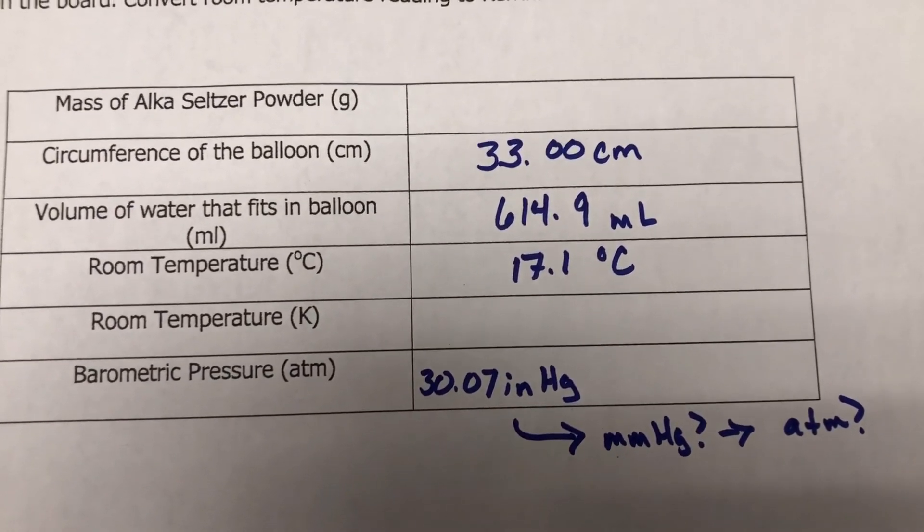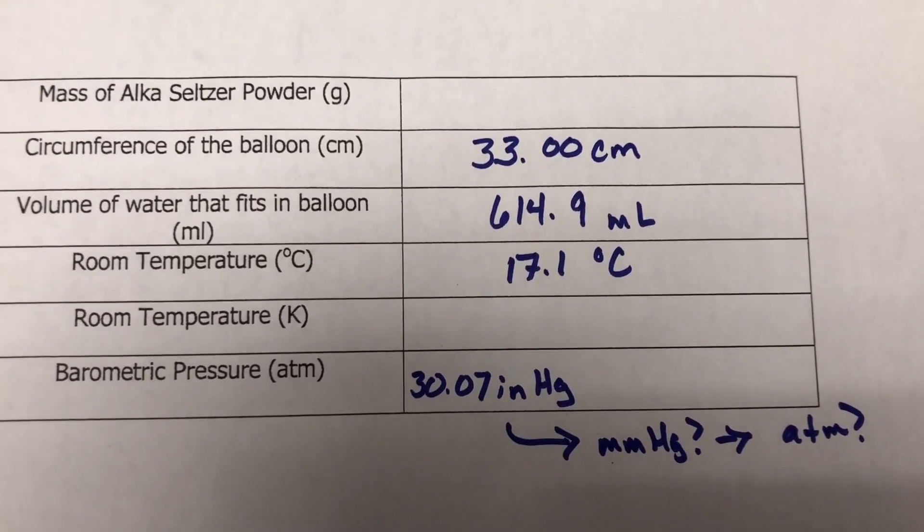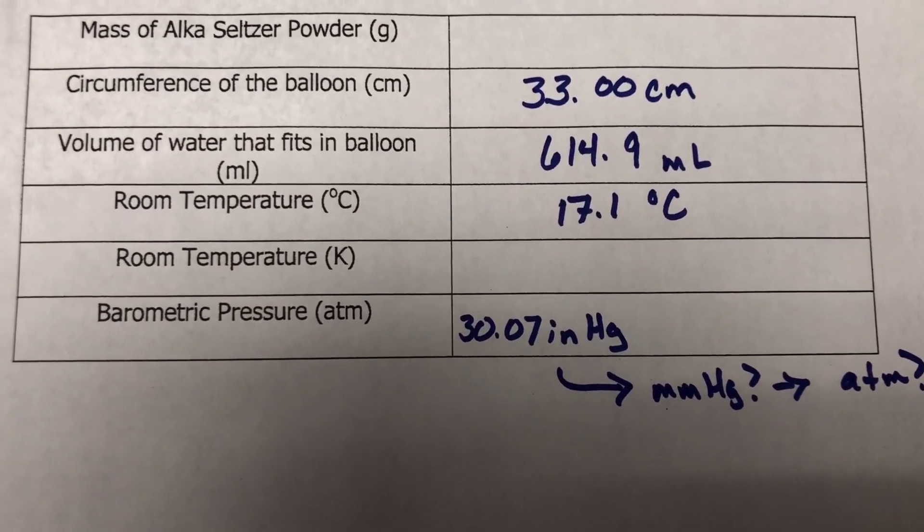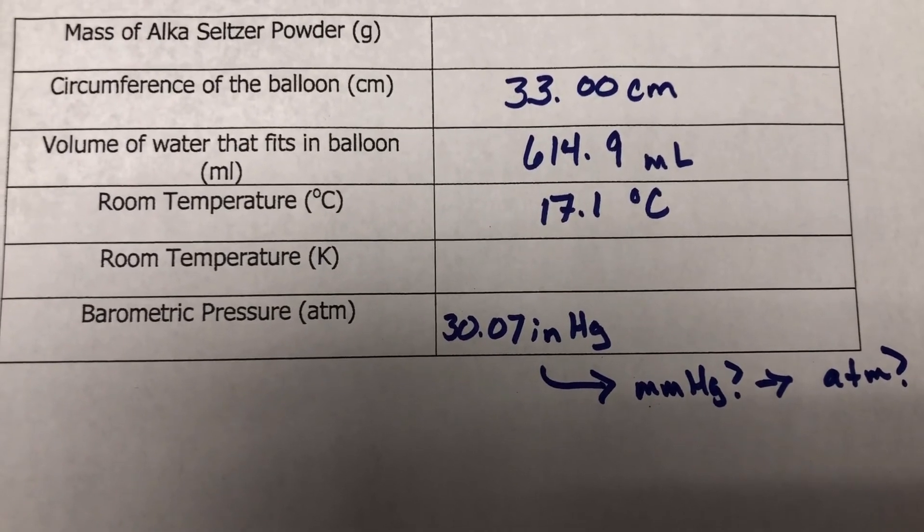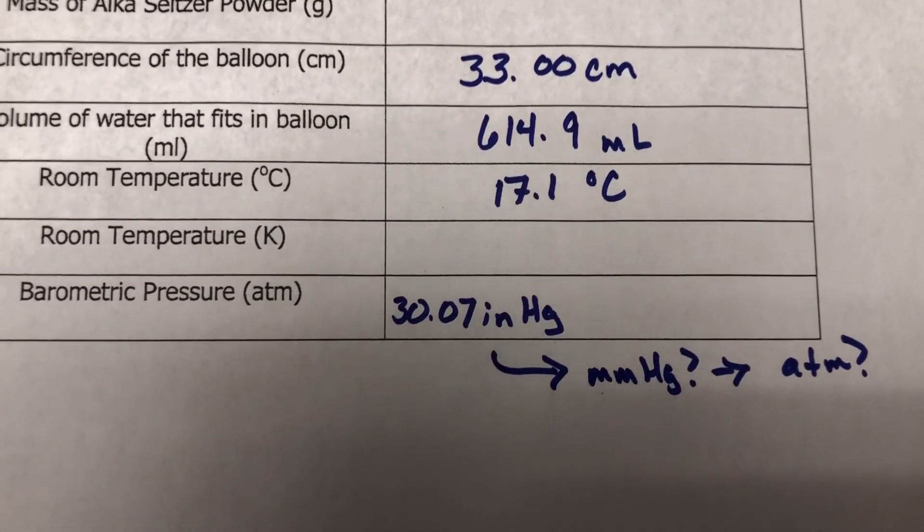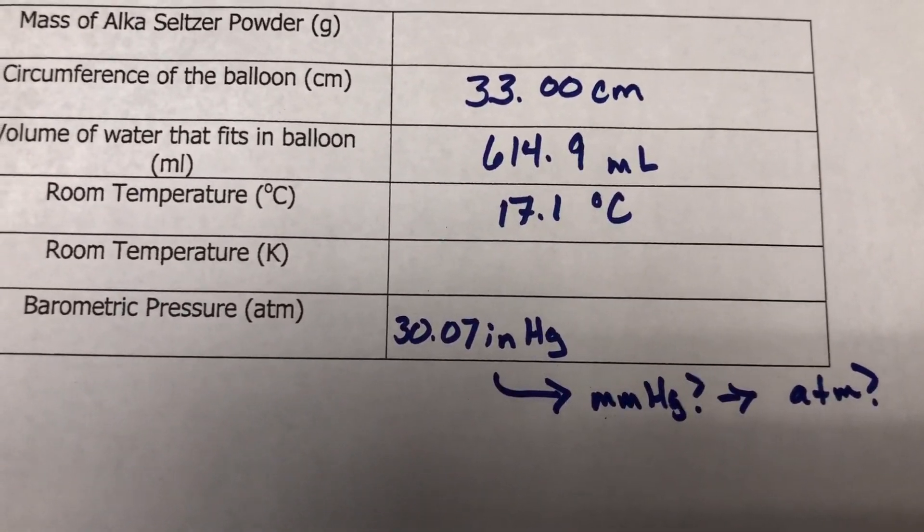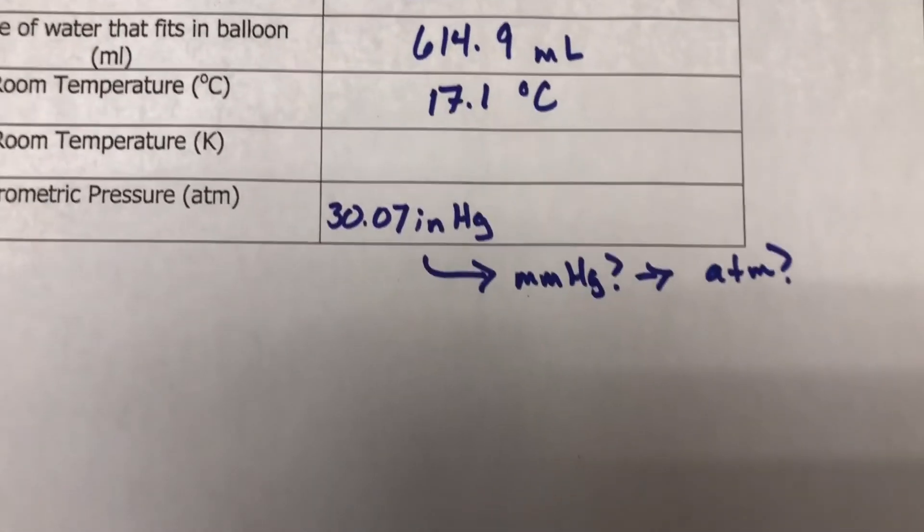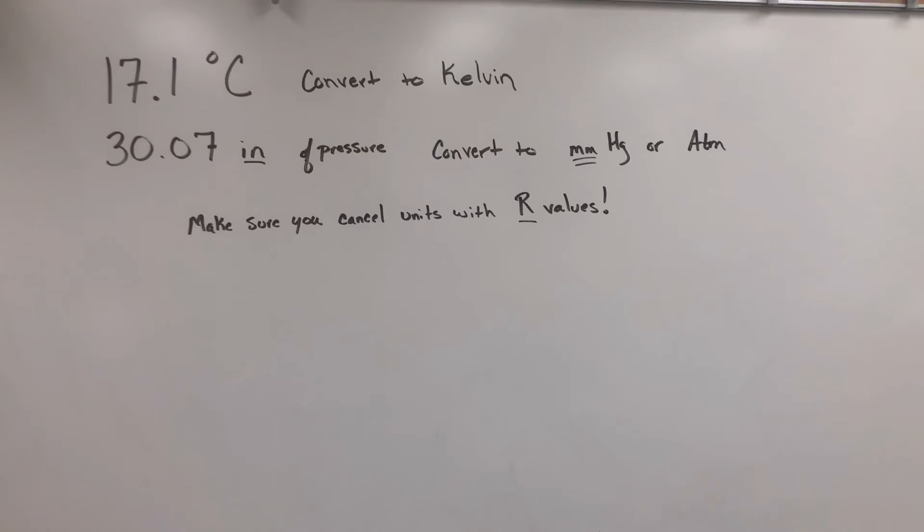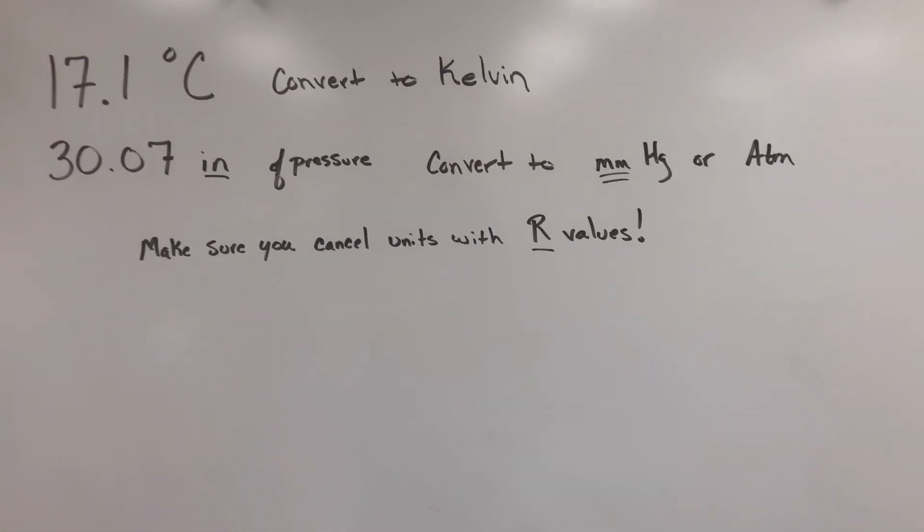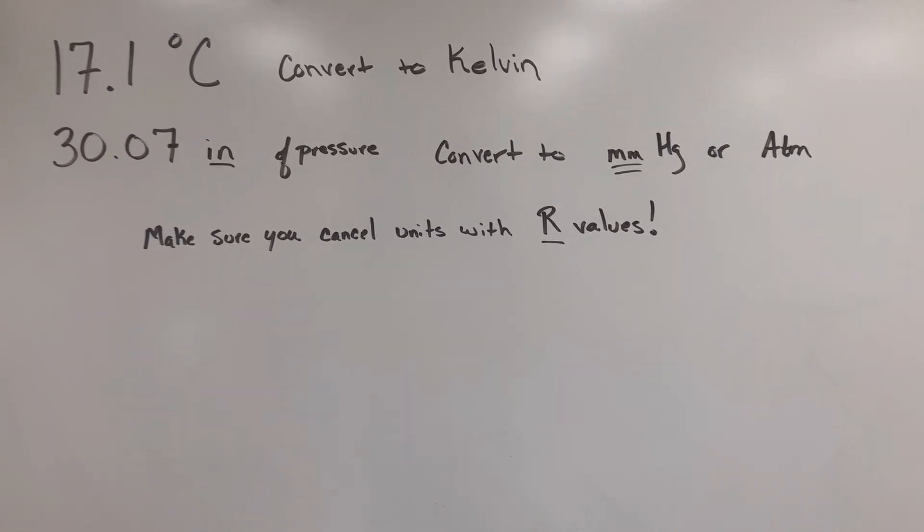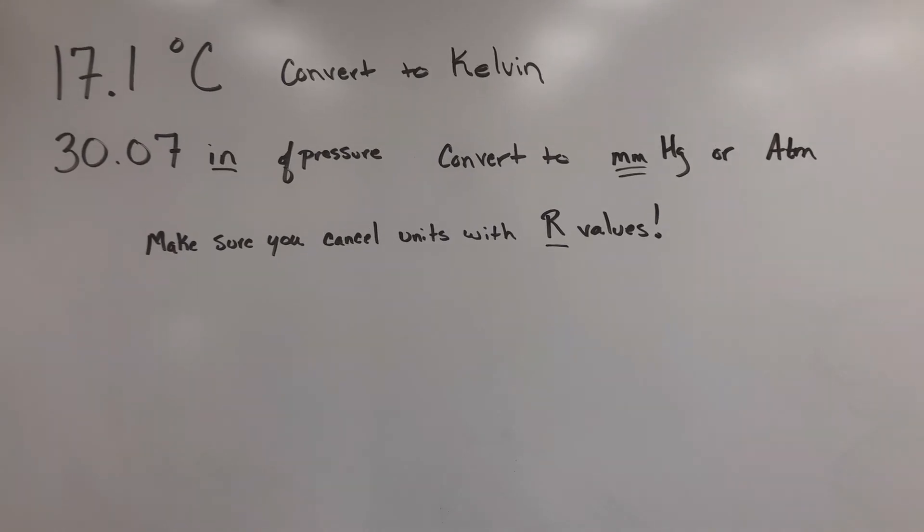At this point, somewhere in the video, you were supposed to calculate or write down the mass of the Alka-Seltzer powder. We said that the circumference of the balloon is 33.0 centimeters. The volume of the water that fits in the balloon was 614.9 milliliters. The room temperature in degrees Celsius is 17.1 degrees Celsius. You will need to convert that to Kelvin. When we looked up the pressure, it was 30.07 inches of mercury. You will need to convert that to atmospheres or millimeters of mercury. That does it for lab number eight, gas laws. You should have all the information required. If you have any questions, go ahead and email me or make a reply to Google Classroom. Good luck and see you in lab number nine.